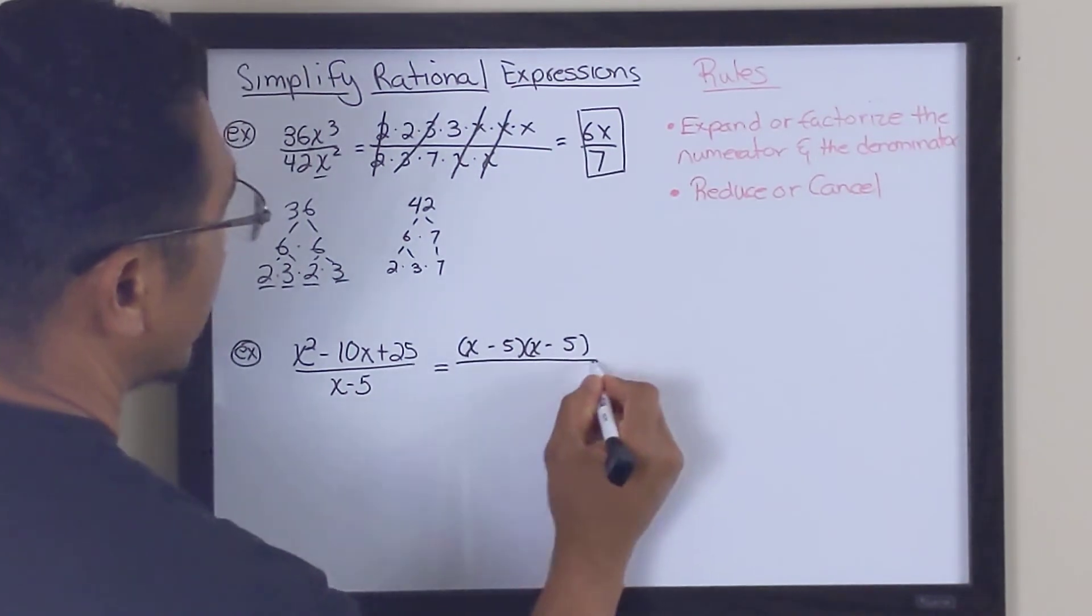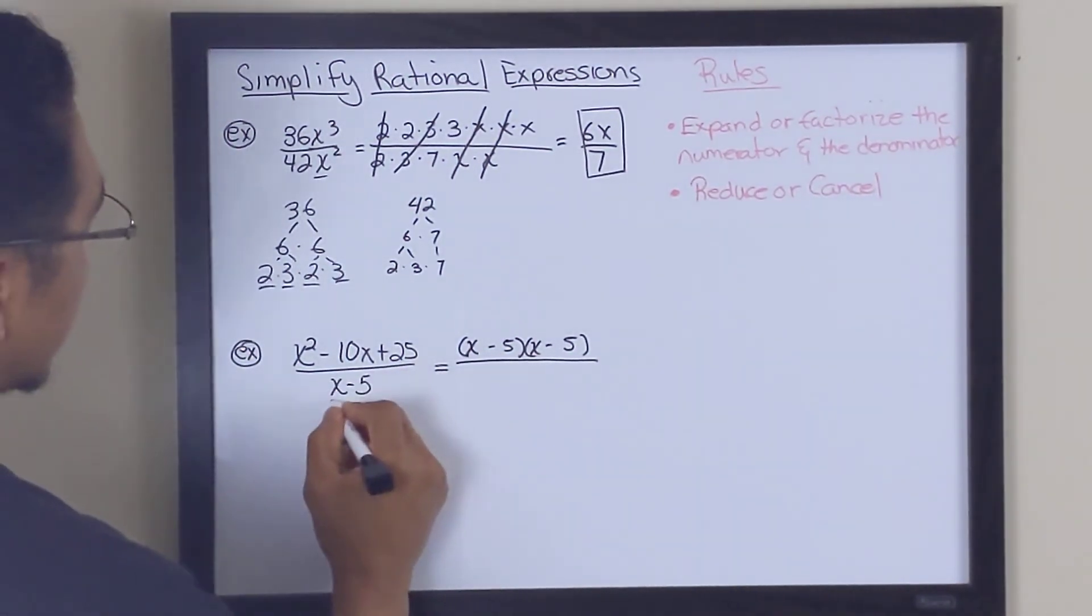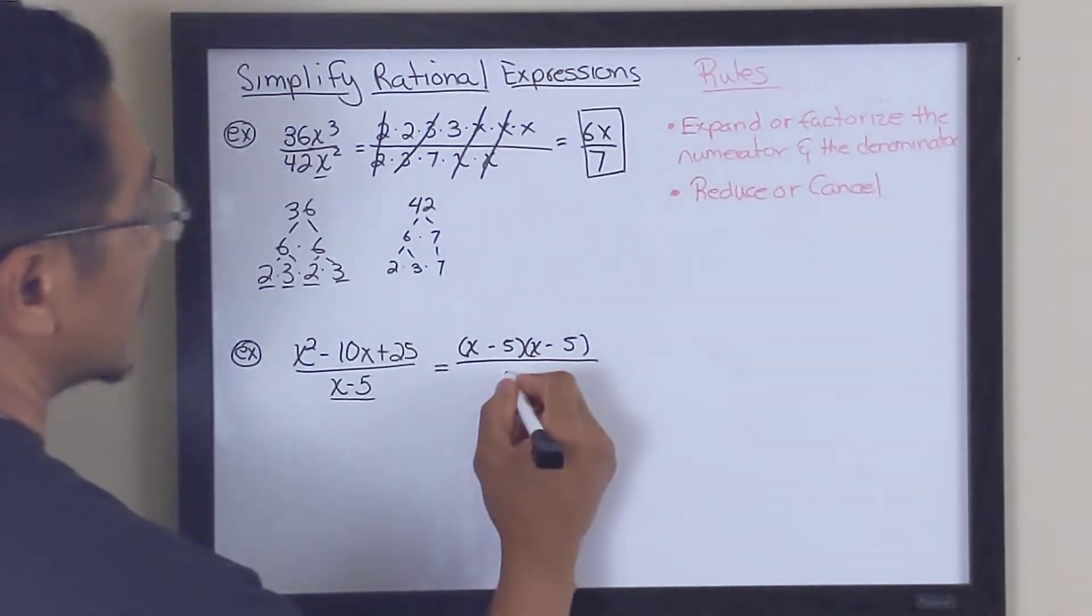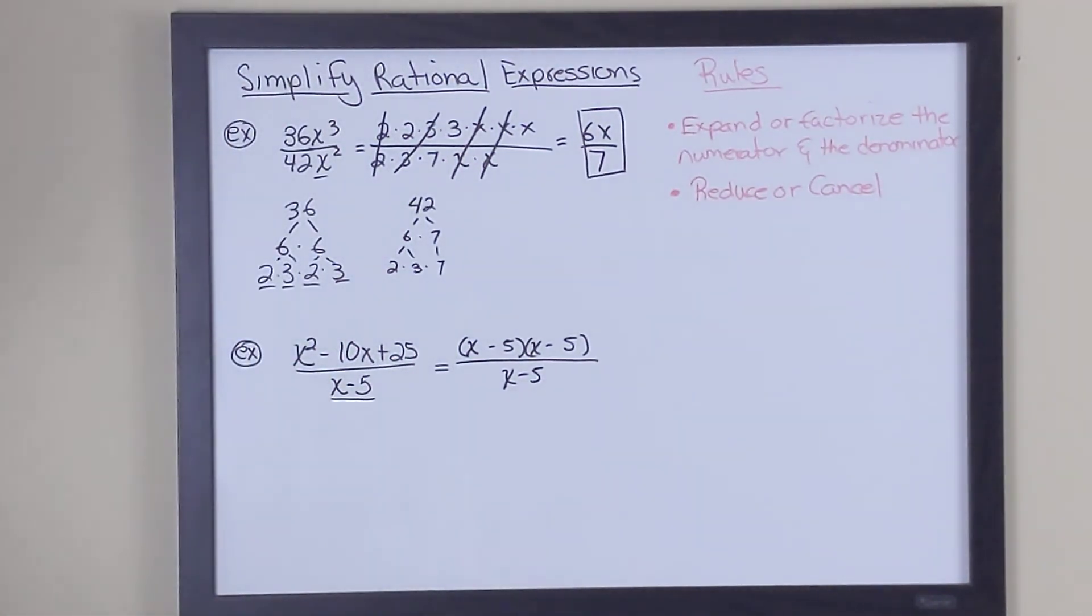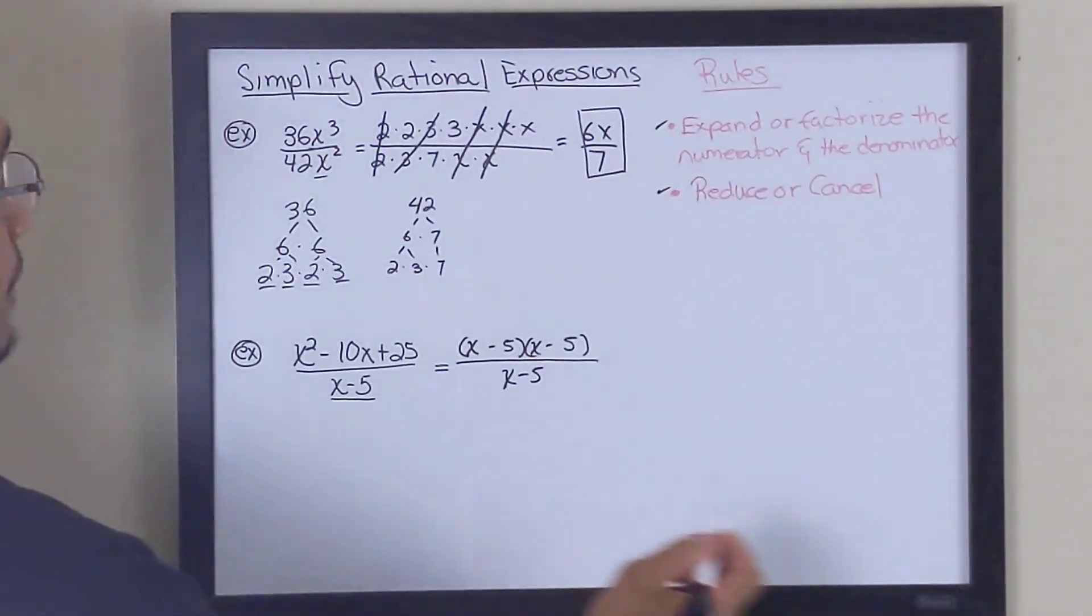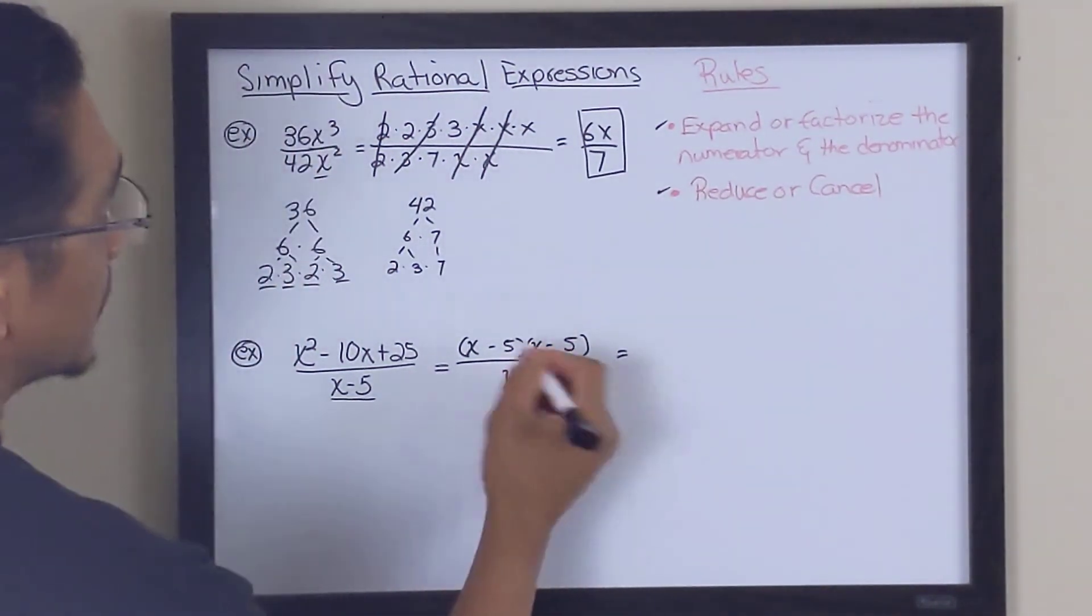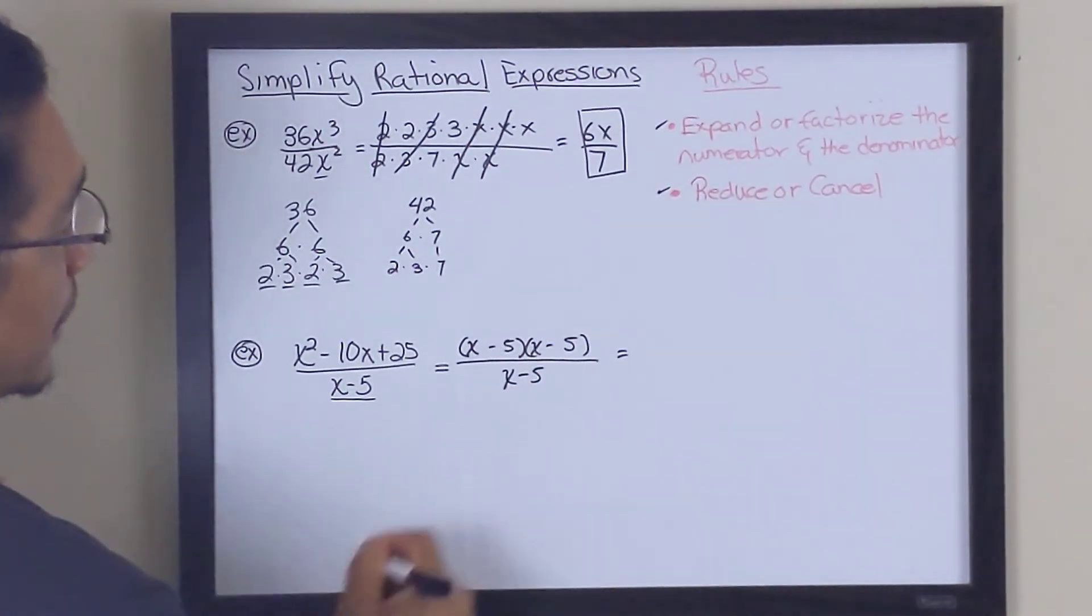And if you look at the denominator here, this is not factorable. So we're going to leave it as x minus 5. So now we've broken down the numerator, and the denominator can't be broken down, so it remains as x minus 5. And of course, we've done this part. Now we're going to reduce or cancel. And so we look to see what is the same between the numerator and the denominator. I've got 2x minus 5, so I can use either this one or this one to cancel with the denominator.